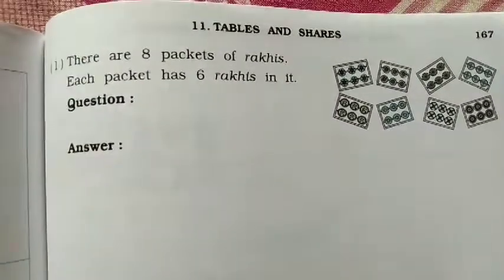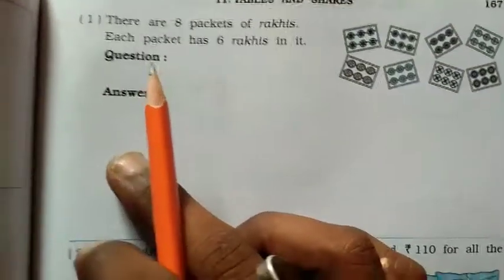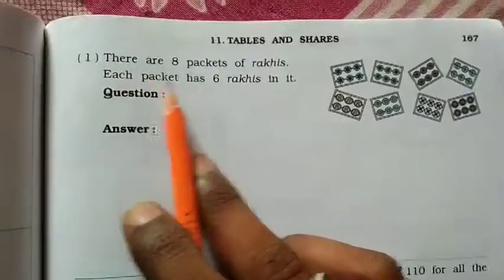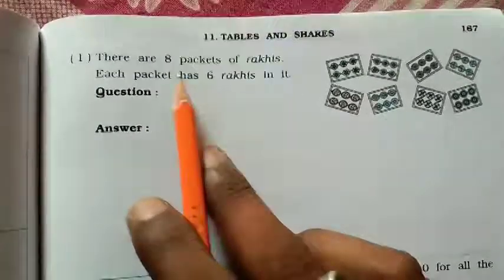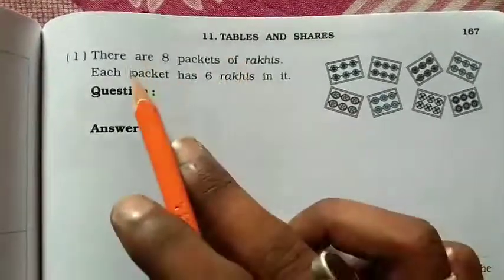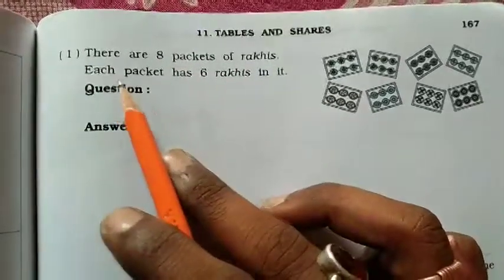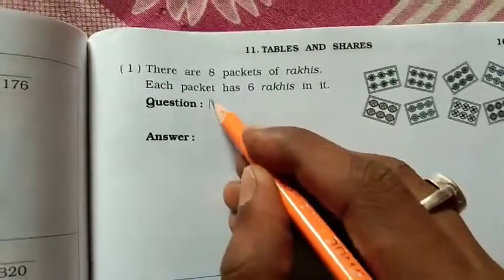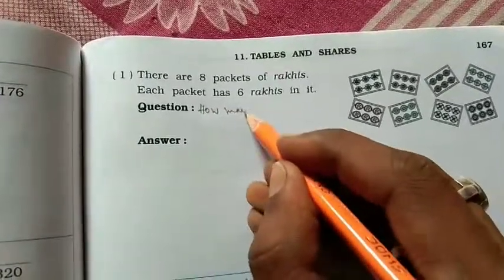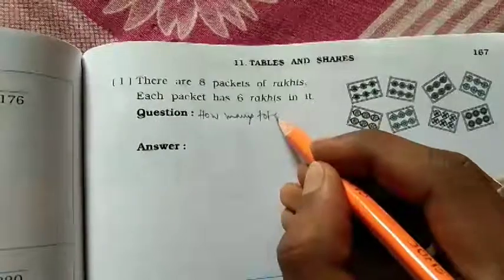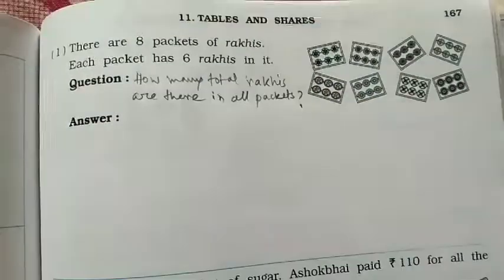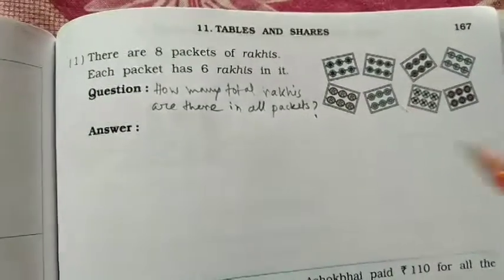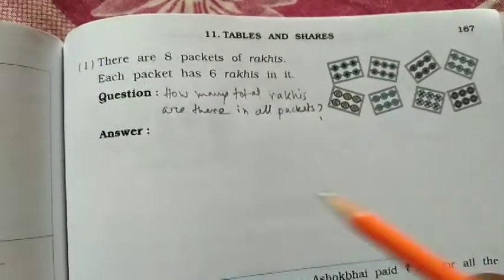Next, page number 167. Question number 1: There are 8 packets of rakhi, and each packet has 6 rakhis in it. The question will be: How many total rakhis are there in all packets? Answer...